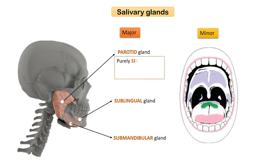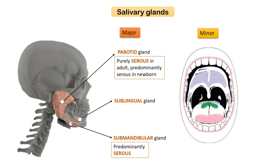The parotid gland is the largest major salivary gland. It is purely serous in nature in adults, whereas in newborns it is predominantly serous. Submandibular glands are intermediate-sized major salivary glands and they are predominantly serous. Sublingual glands are the smallest of the three major salivary glands and are predominantly mucus-producing.